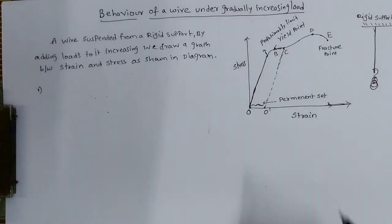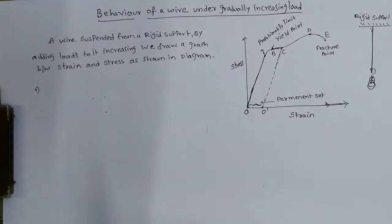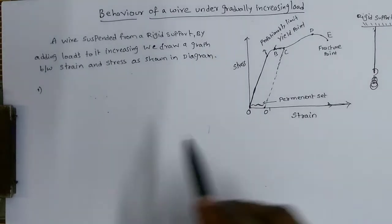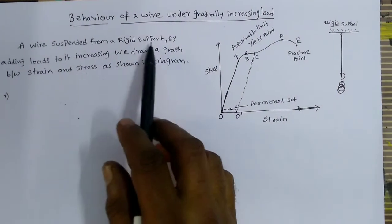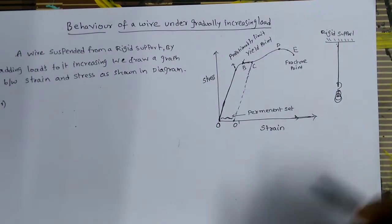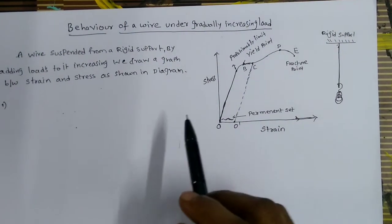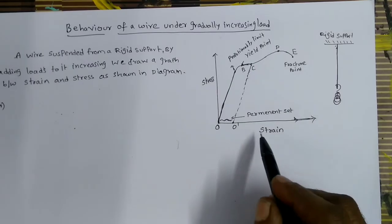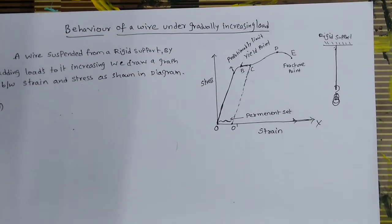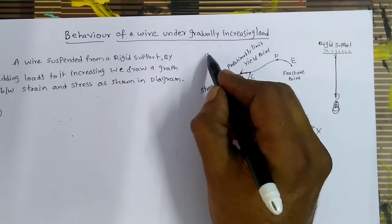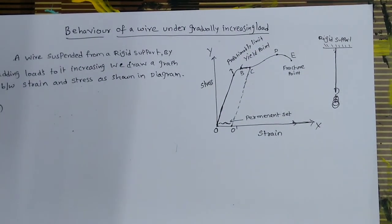Without wasting time, I would like to explain this by using the graphical method. A wire is suspended from the rigid support, and by adding loads to it increasingly, we can draw the graph with strain on the x-axis and stress on the y-axis. This is the diagram.